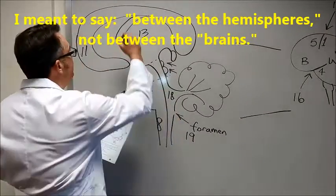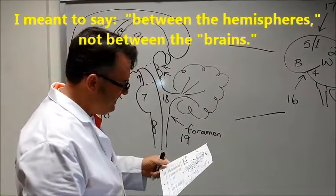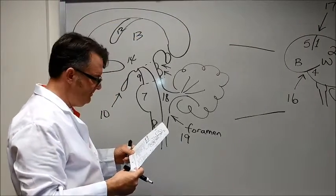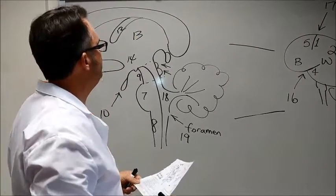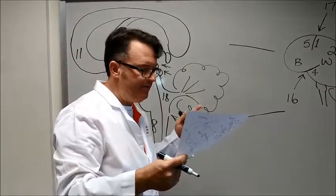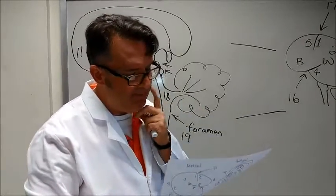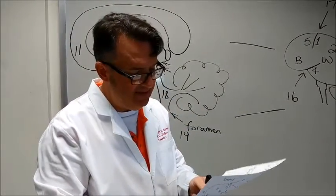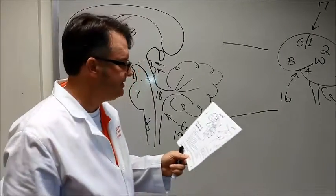Twelve is the fornix and this is an output of the limbic system, the hippocampus, which is important for memory and learning. Notice at the bottom that amygdala and hippocampus are part of the limbic system and influence memory, learning, behavior, and emotion.